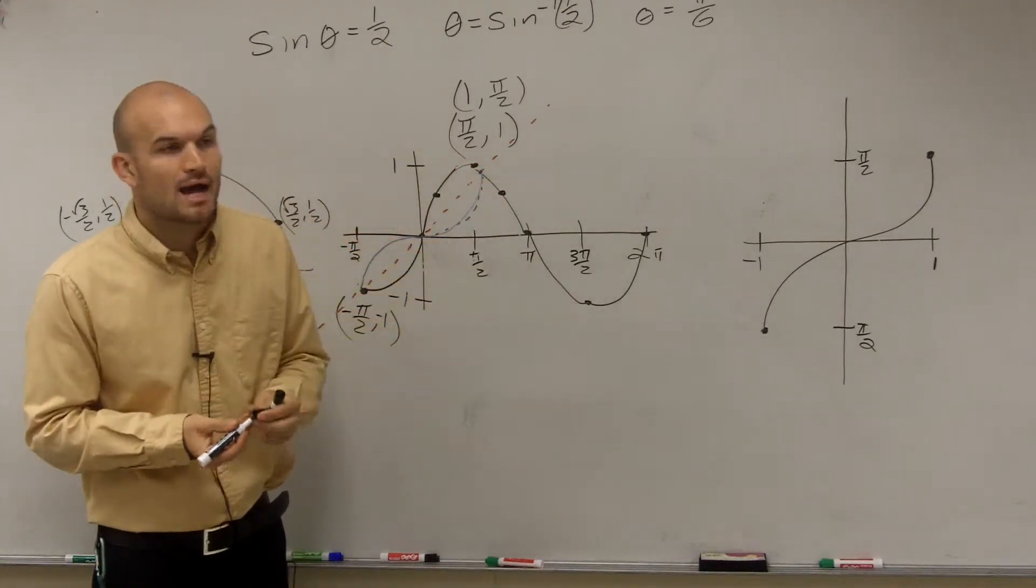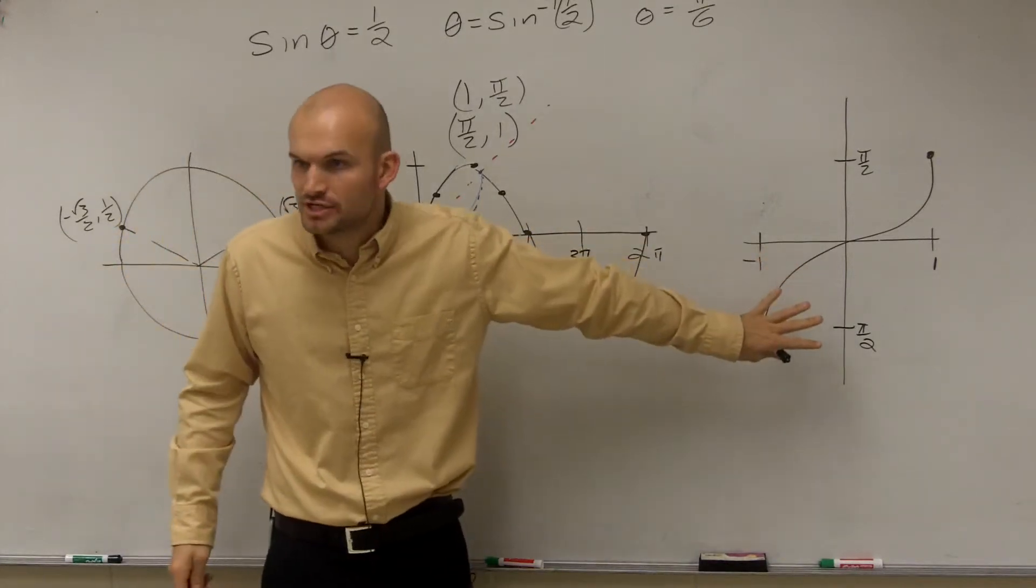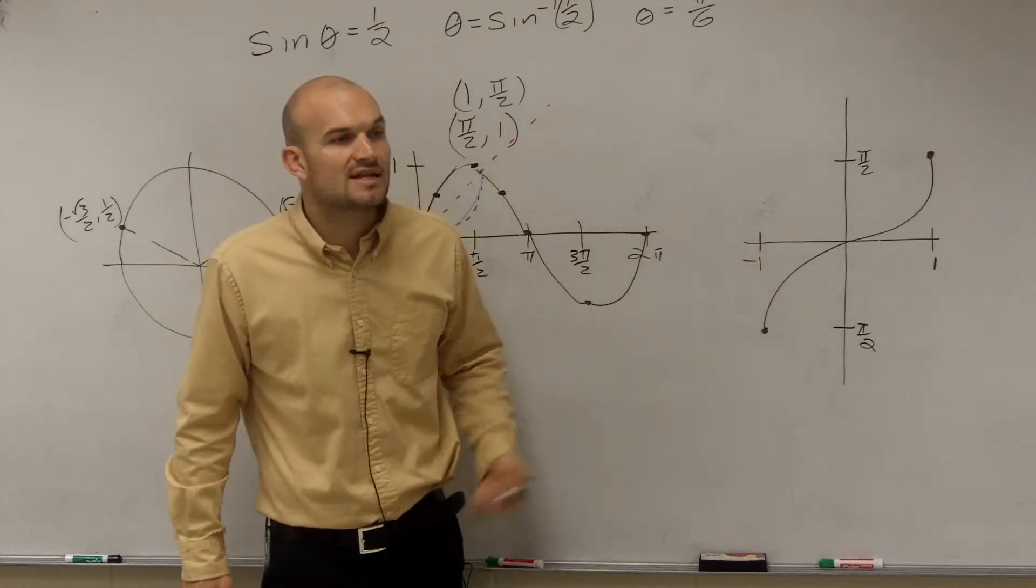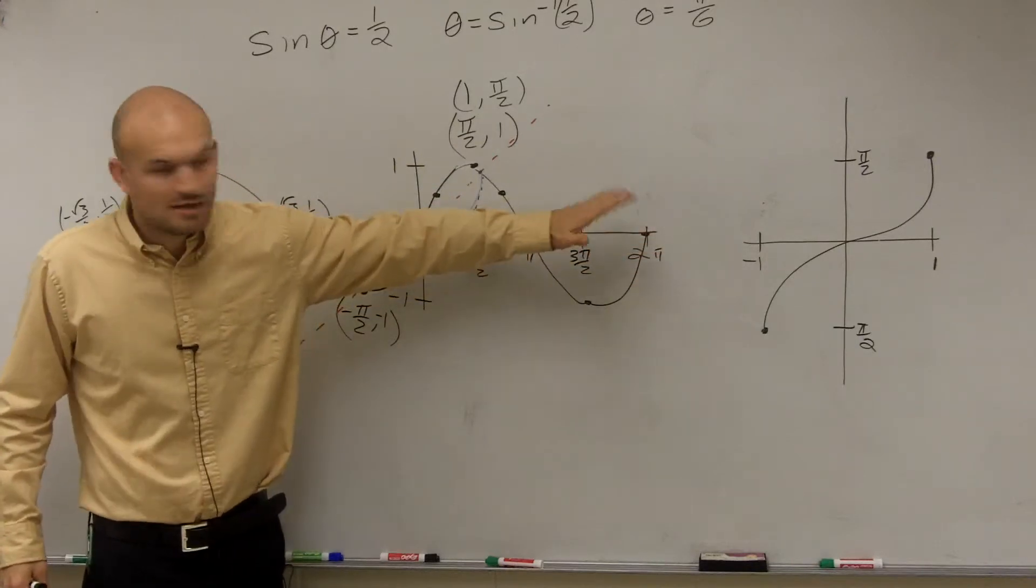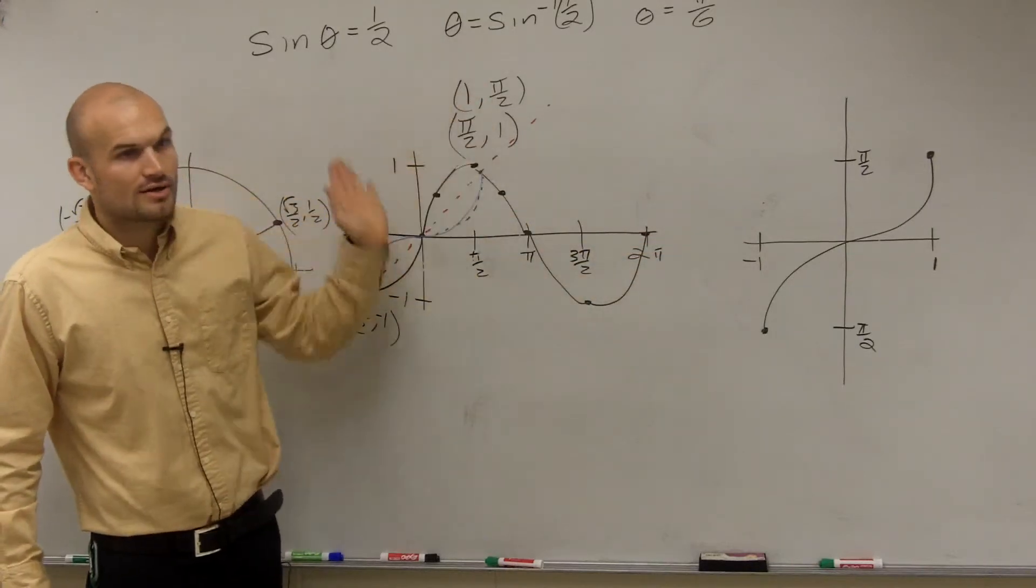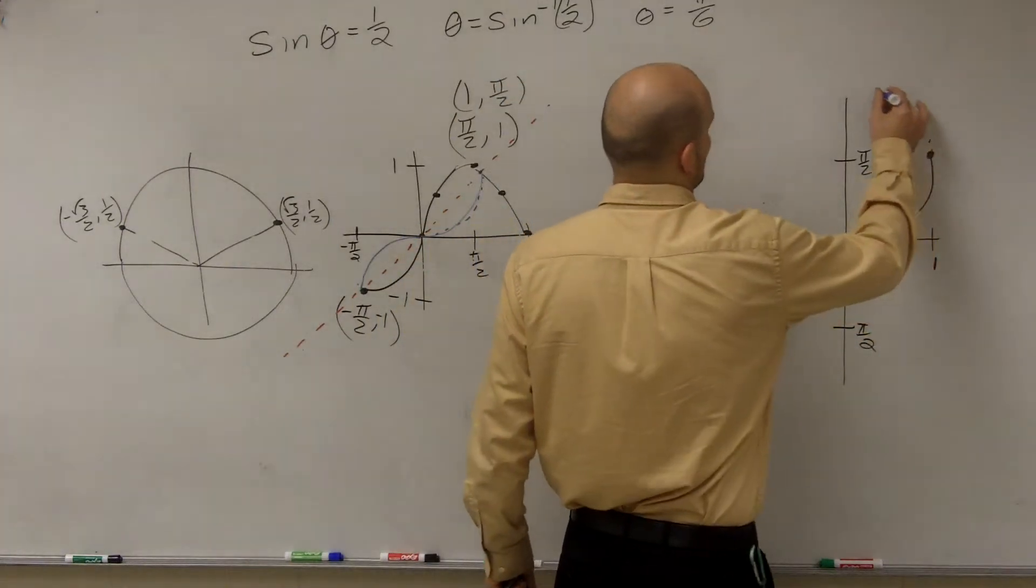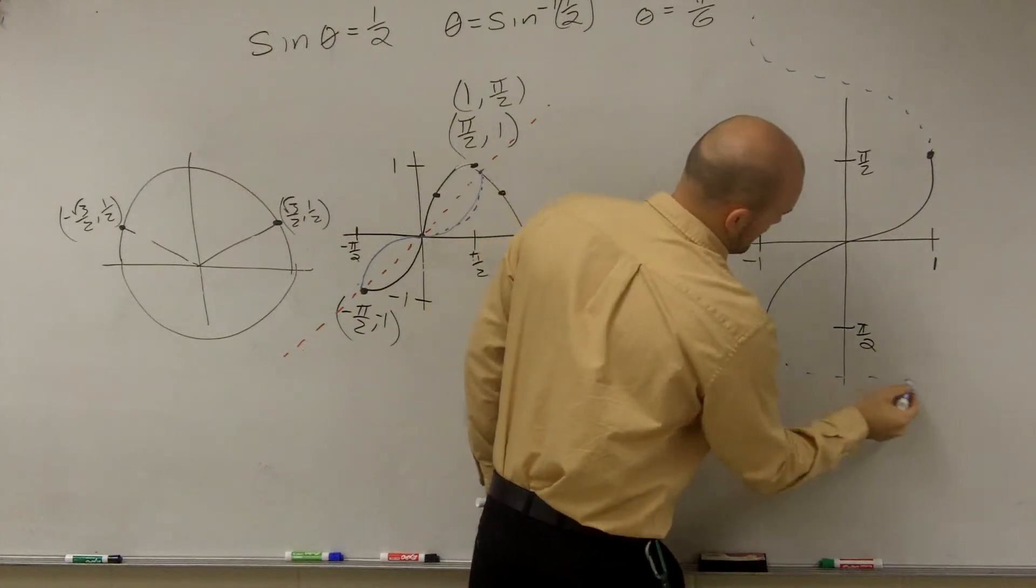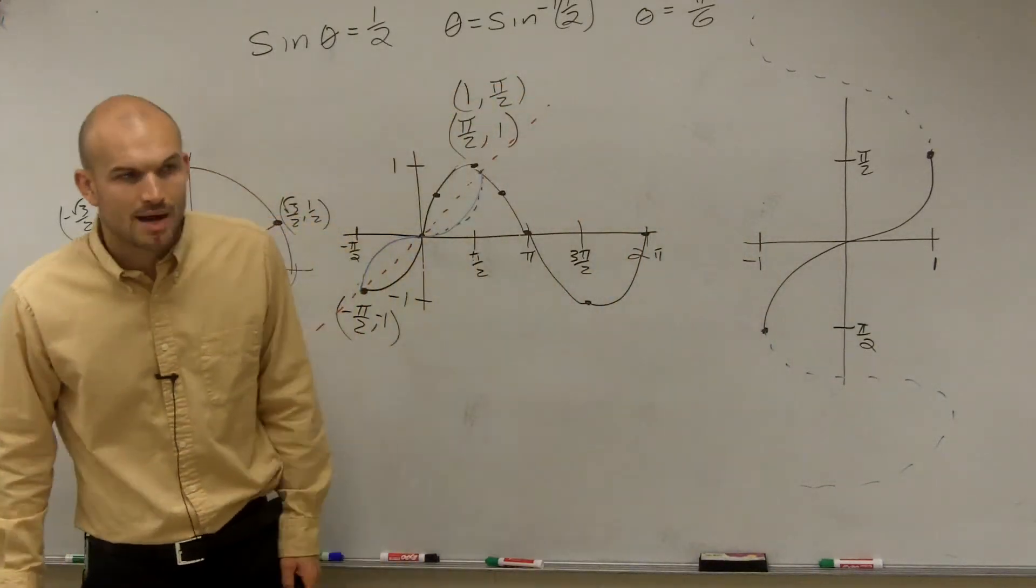That's just this section right here. If I just graph that first section, is this a function using the vertical line test? Yes. Now let's continue the function because this graph goes on and on forever. If I reflect it over, it should go on and on forever as well. Here comes our problem.